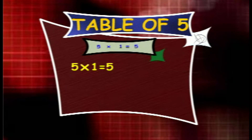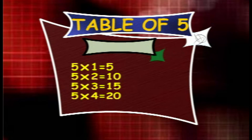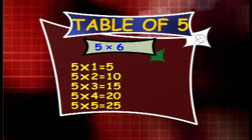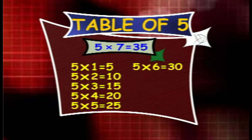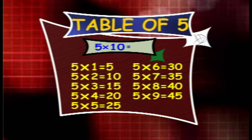Table of 5. 5 1s are 5, 5 2s are 10, 5 3s are 15, 5 4s are 20, 5 5s are 25, 5 6s are 30, 5 7s are 35, 5 8s are 40, 5 9s are 45, 5 10s are 50.